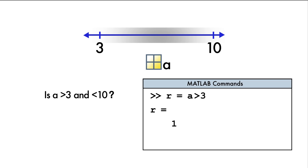Now, what if the problem we were solving had multiple conditions that need to be satisfied? For example, how can we determine if A is both greater than 3 and less than 10?